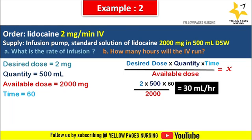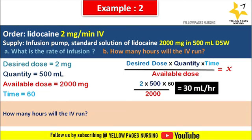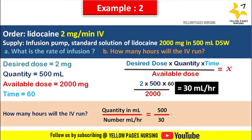Second question: how many hours will the IV run? Formula is quantity in mL divided by mL per hour: 500 ÷ 30 = 16.6, otherwise 17 hours. The IV runs for 17 hours. Now using the ratio and proportion method.